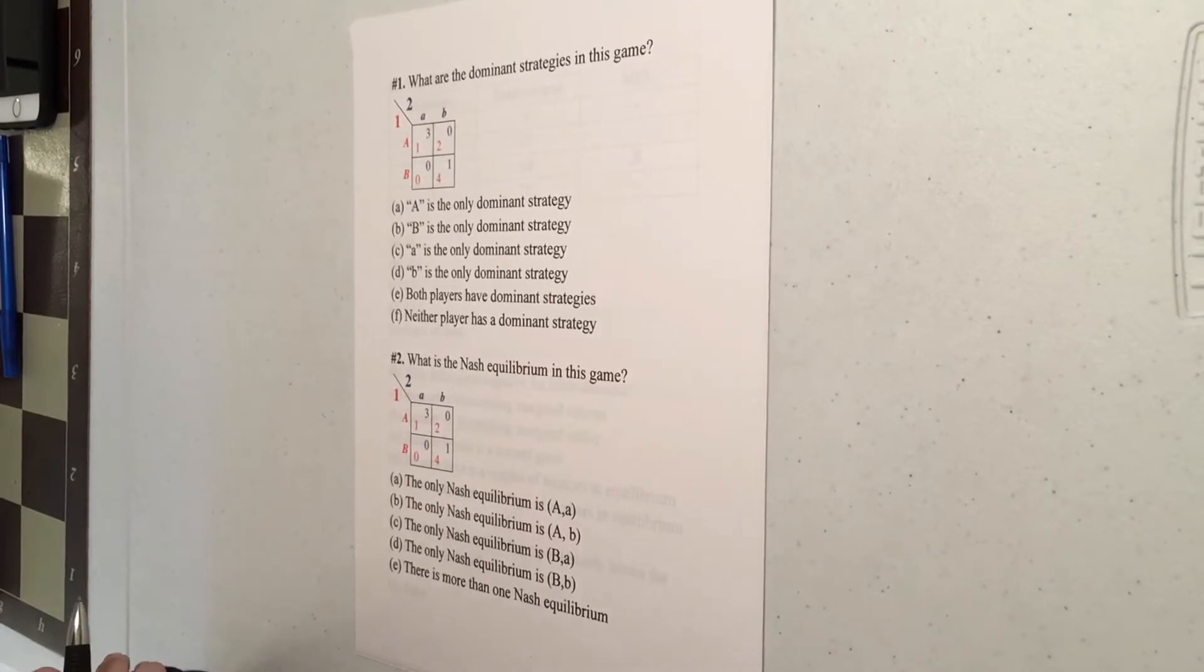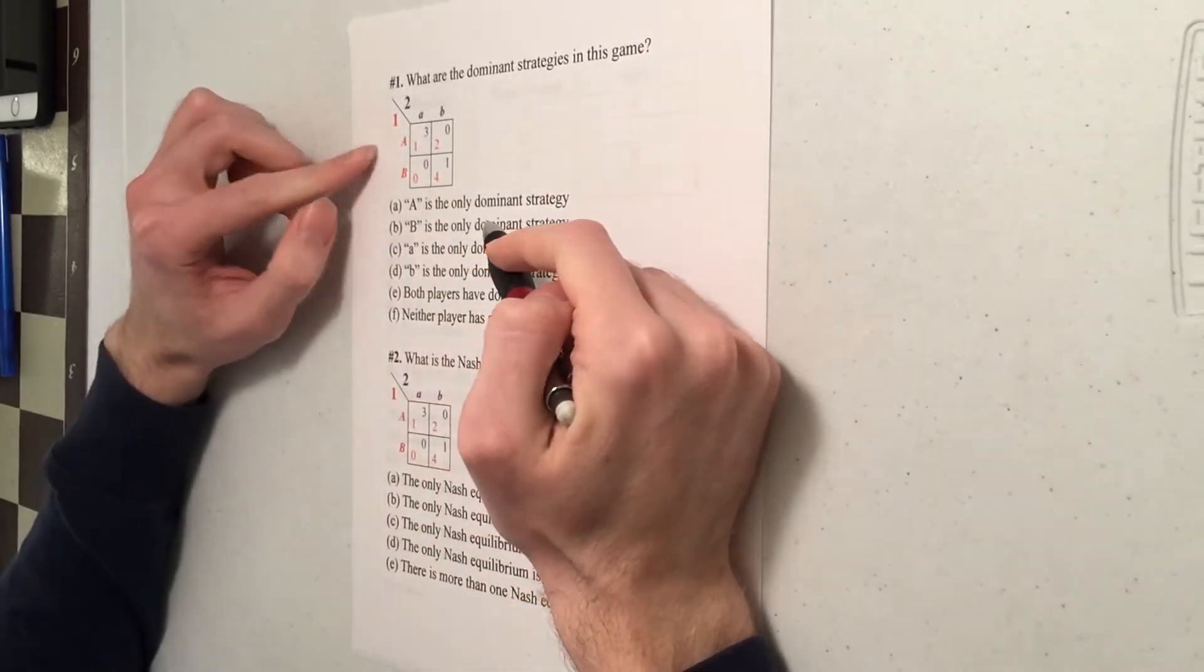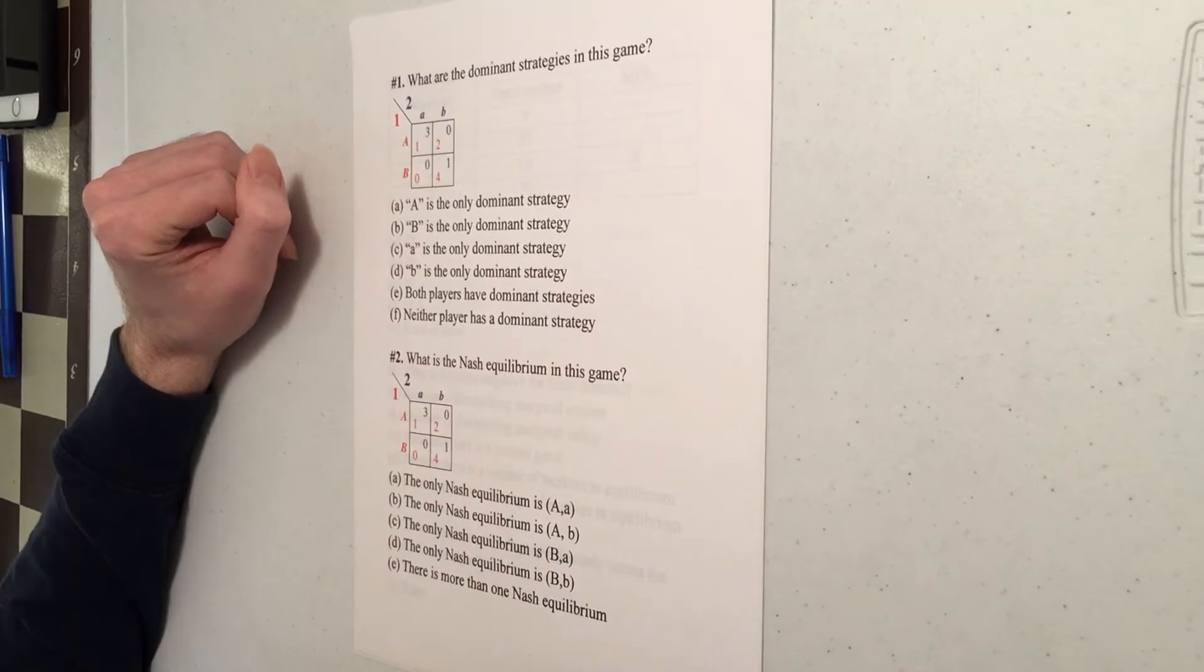The first question we're looking at is we're given this game here. We have two players, player one and player two. Player one here is shown in red and player two in blue. We're trying to find the dominant strategies in this game.